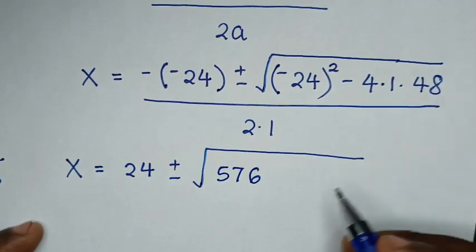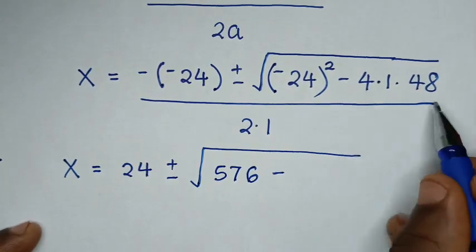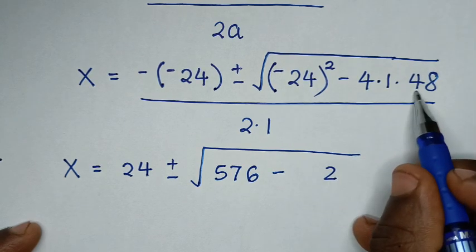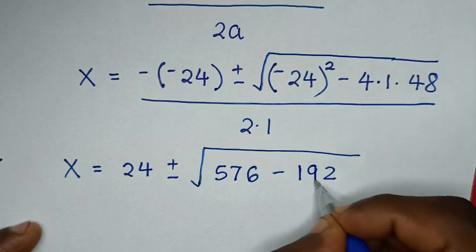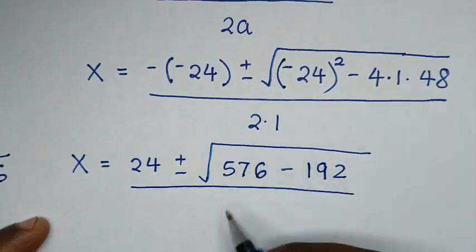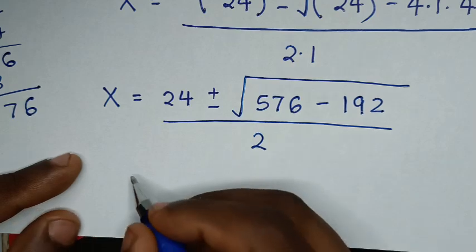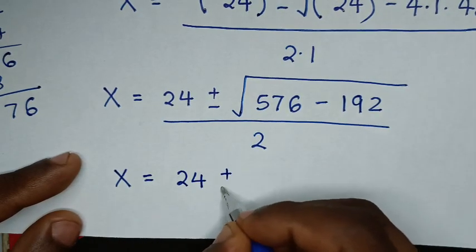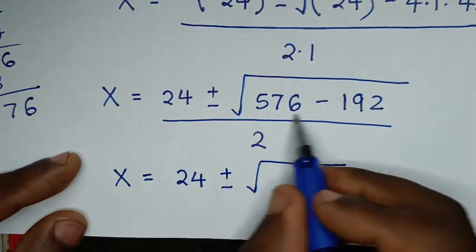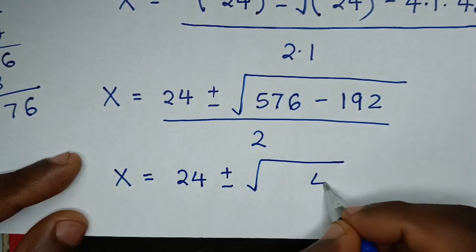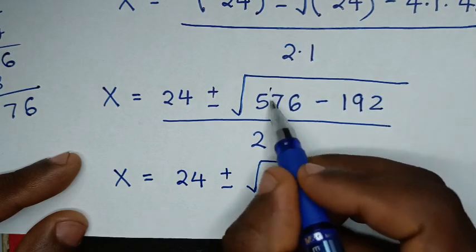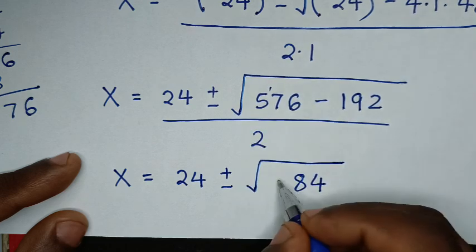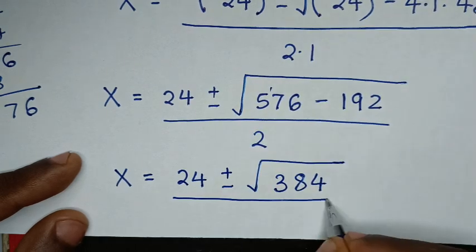Then minus 4 times 48: here it will be 4 times 8 is 32, carry 3; 4 times 4 is 16 plus 3 is 19. So 4 times 48 is 192. Then over 2 times 1 is 2. Then it will be x is equal to 24 plus or minus square root of 576 minus 192, which is 384, over 2.